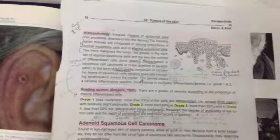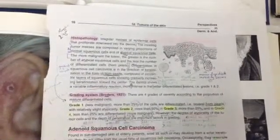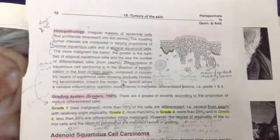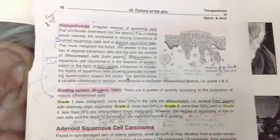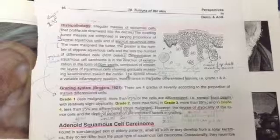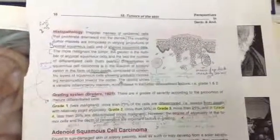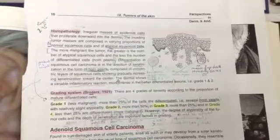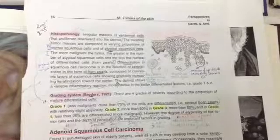The histopathology shows irregular masses of epidermal cells that proliferate downward into the dermis. It invades the dermis. The tumor masses are composed of varying proportions of normal squamous cells and atypical squamous cells. The more malignant the tumor, the greater the number of atypical squamous cells and the less the number of differentiated cells and horned pearls.